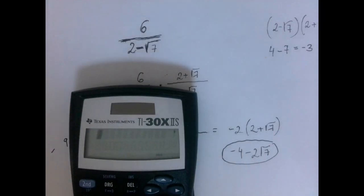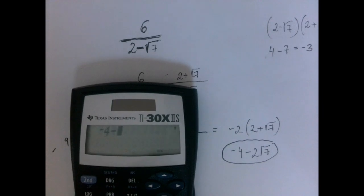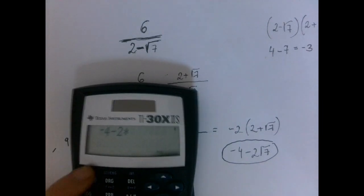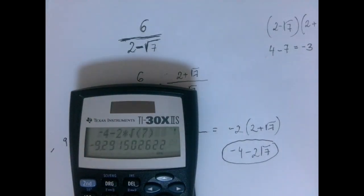Now it's easier to punch our form. So we have negative 4 minus 2 times square root of 7. We got the same thing. So our answer is very likely correct.